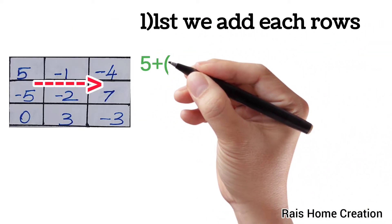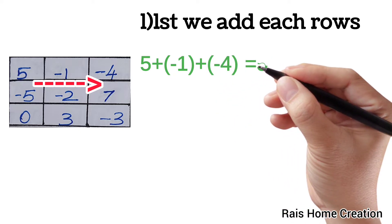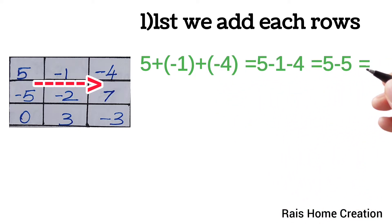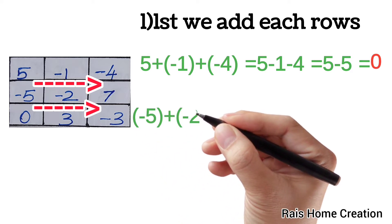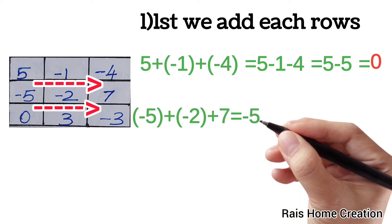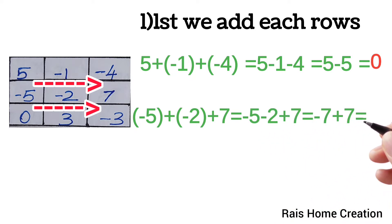We add each row. 5 plus minus 1 plus minus 4 equal to 5 minus 1 minus 4 equal to 5 minus 5 equal to 0. Next, we will add minus 5 plus minus 2 plus 7 equal to minus 5 minus 2 plus 7 equal to minus 7 plus 7 equal to 0.